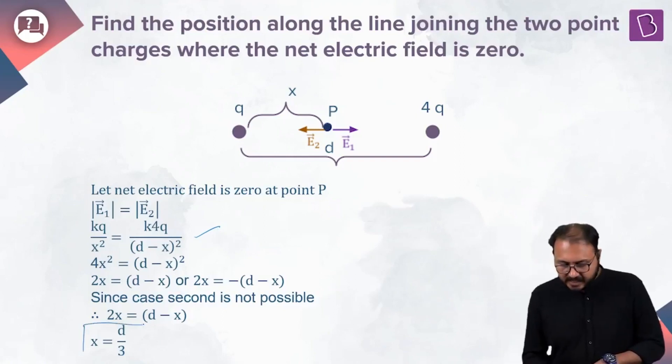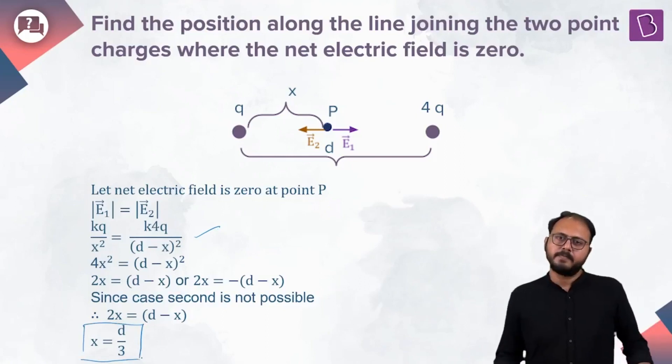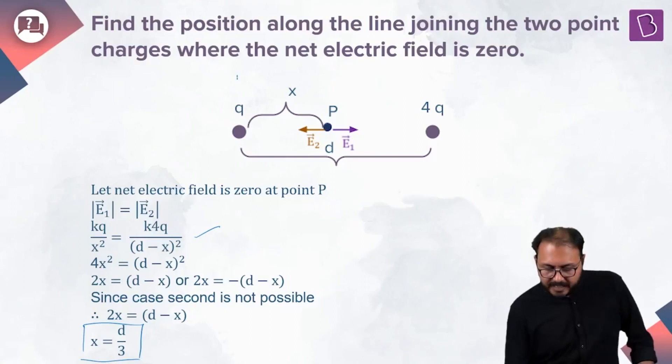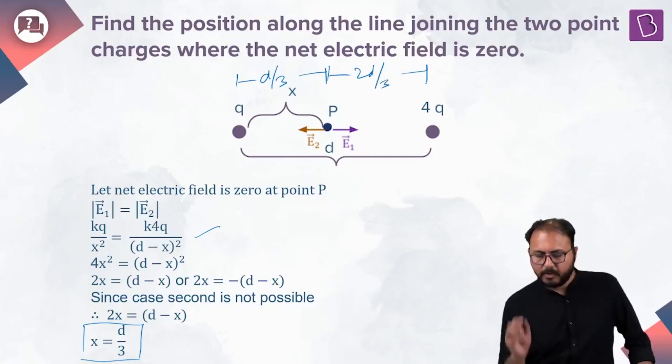I get X equals D by 3. That means the null point is at D by 3 from small Q and 2D by 3 from 4Q.